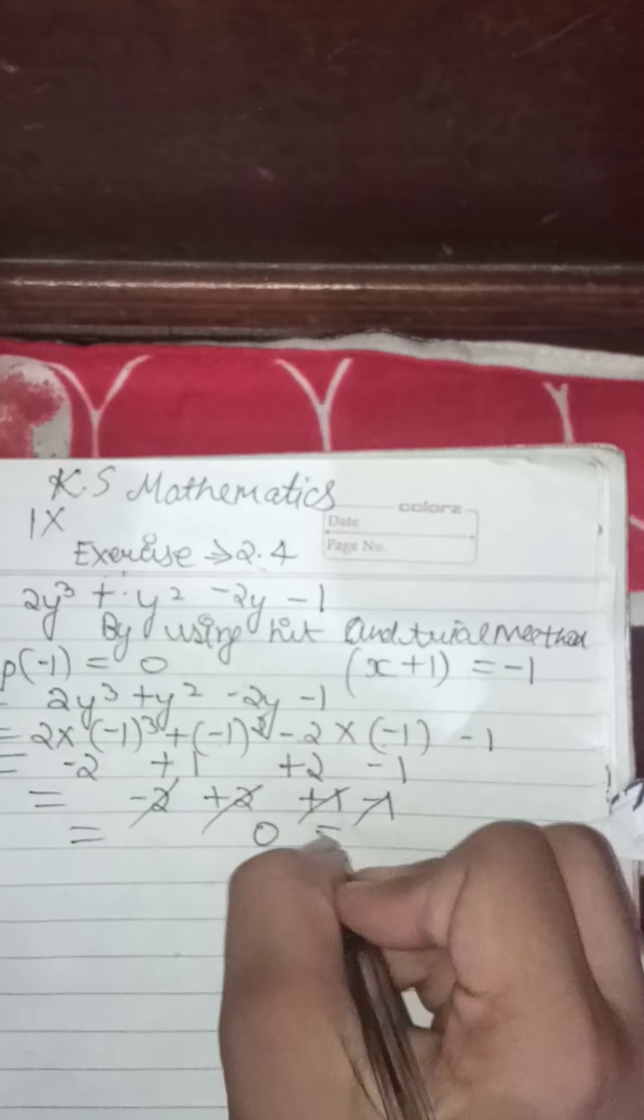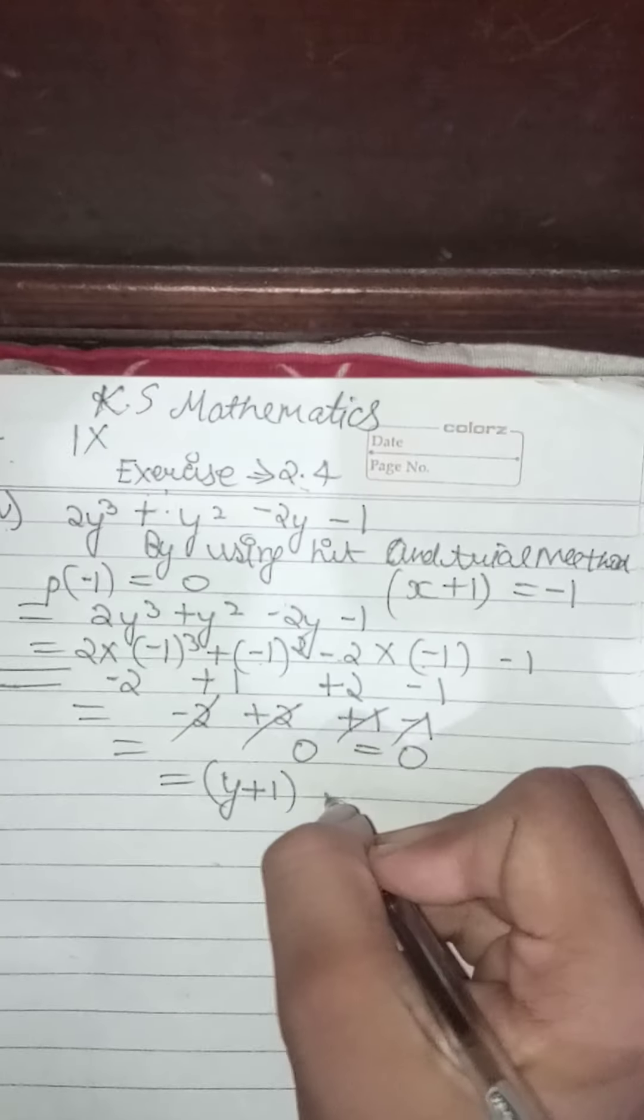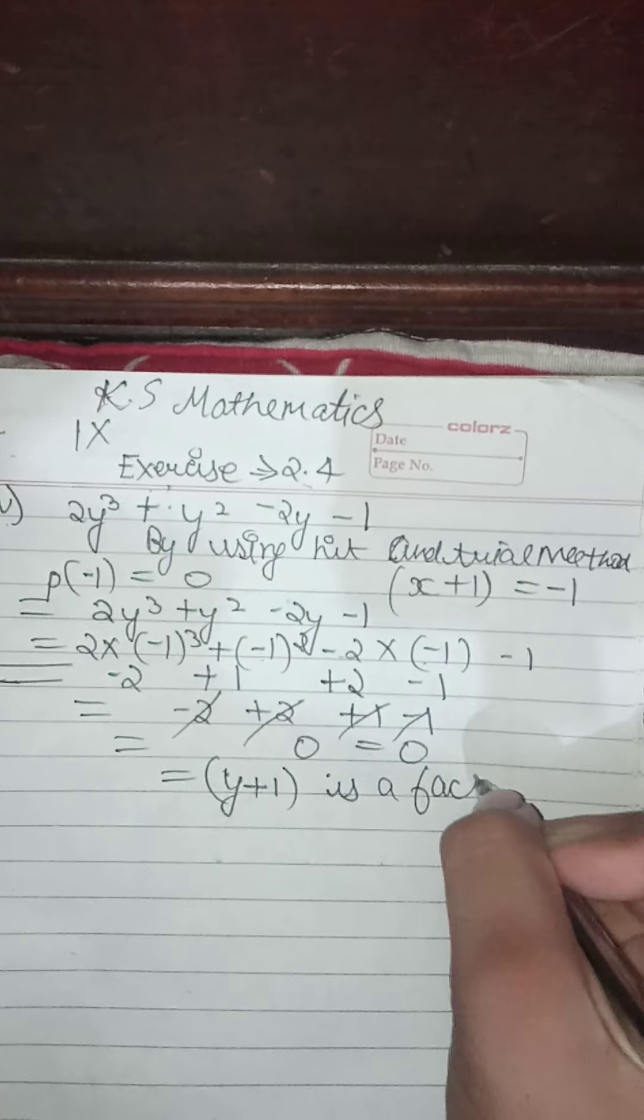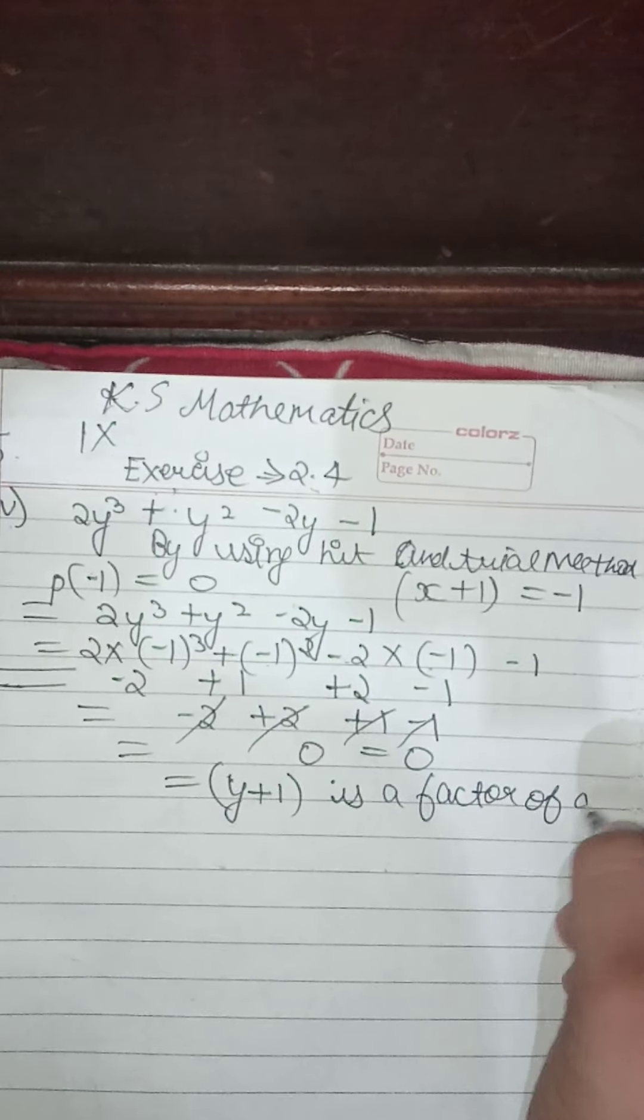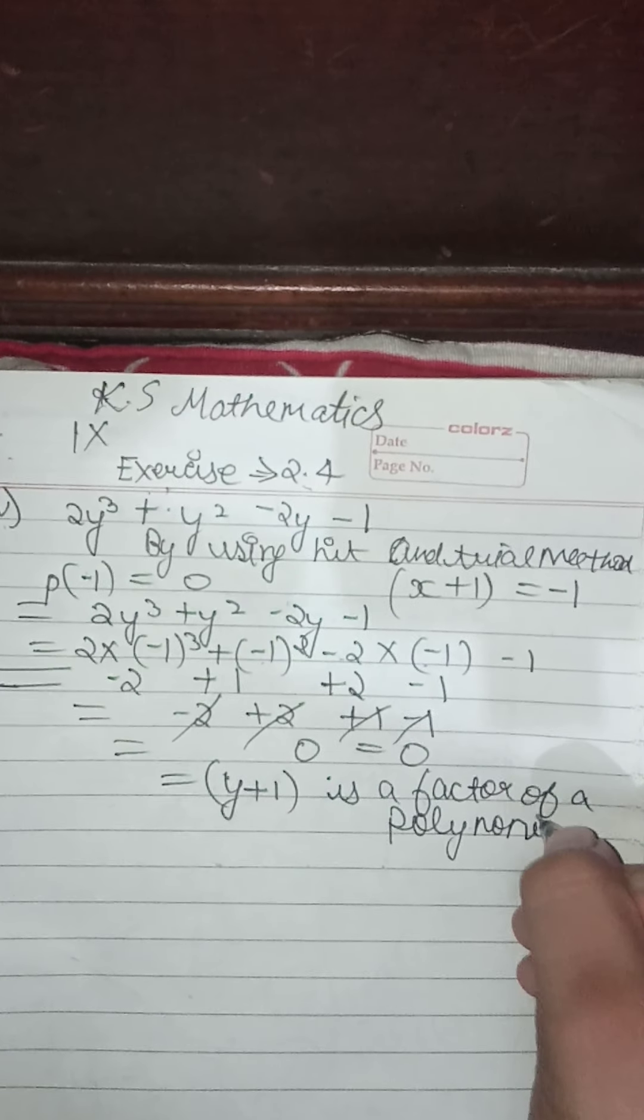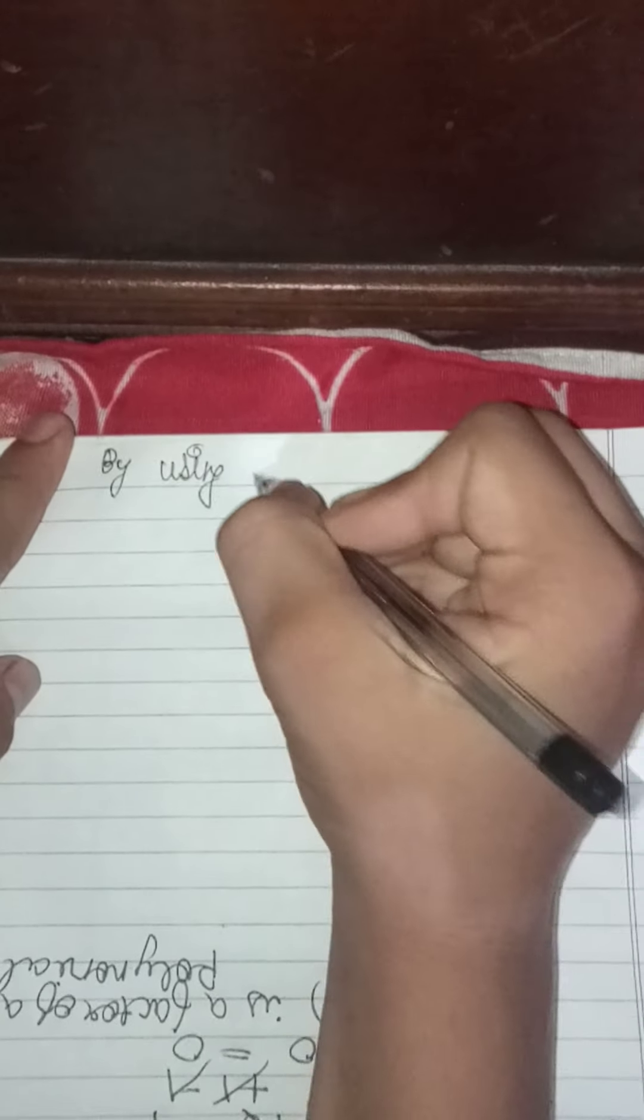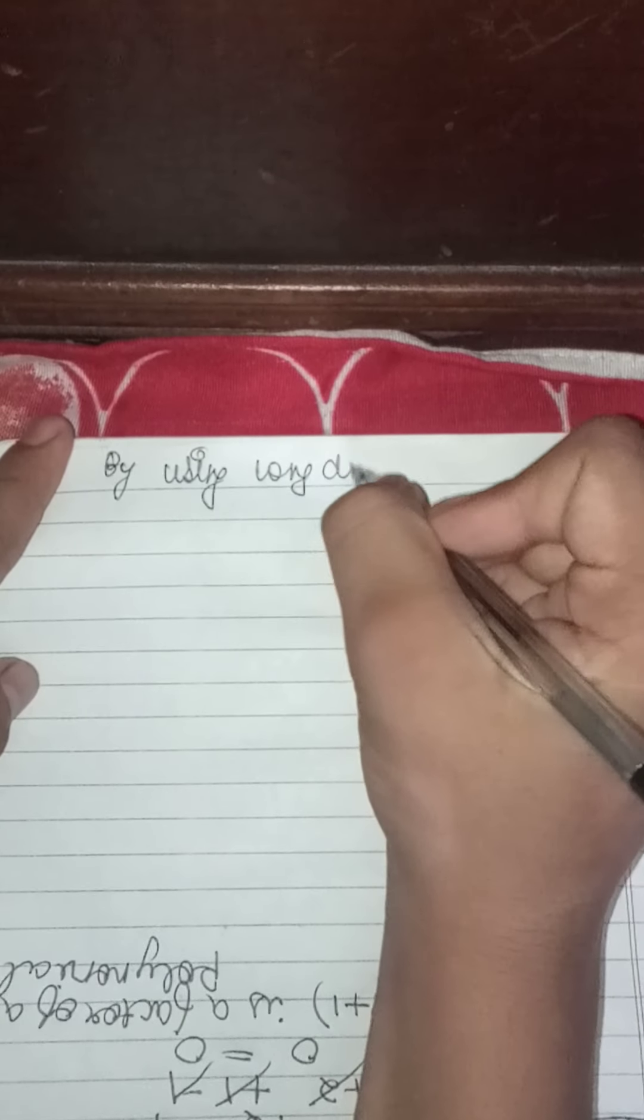So minus 2 plus 2 plus 1 minus 1 cancel, so 0 equals 0. So y plus 1 is a factor of the polynomial. We will do this by using long division method.